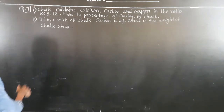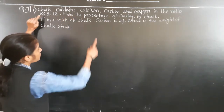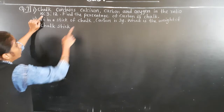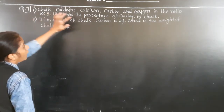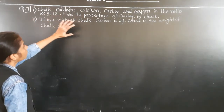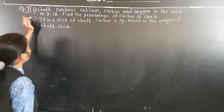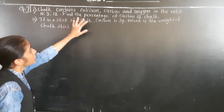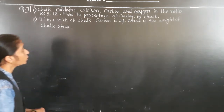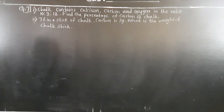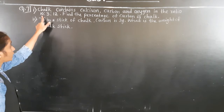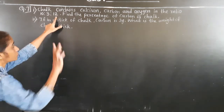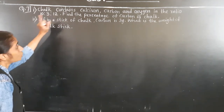Now see what is given — the ratio is given. Chalk contains calcium, carbon, and oxygen in the ratio 10 is to 3 is to 12. So calcium is 10, carbon is 3, and oxygen is 12.